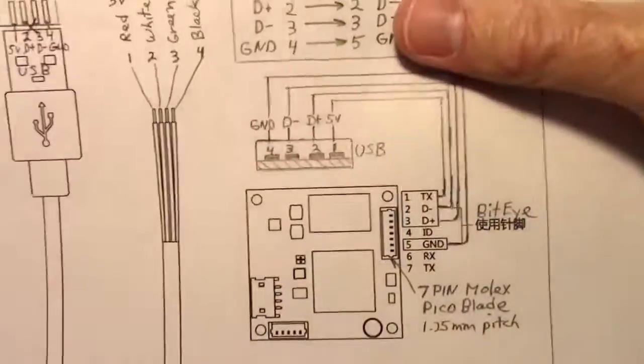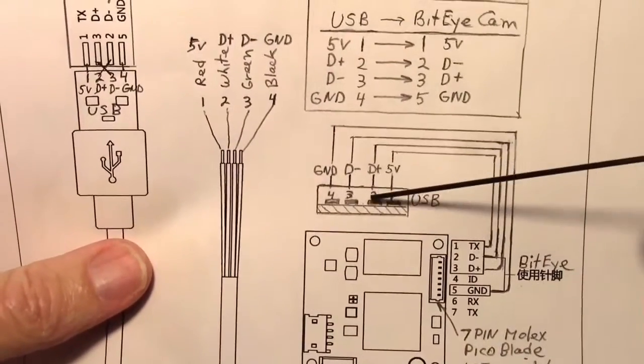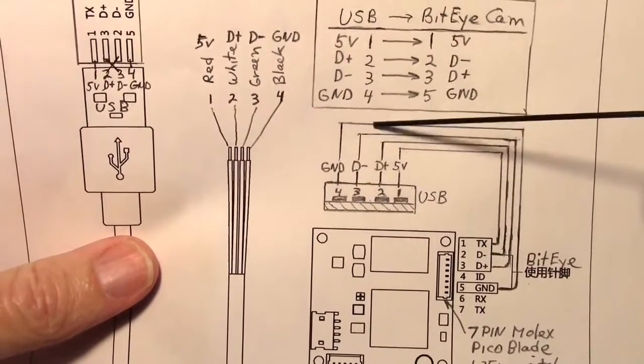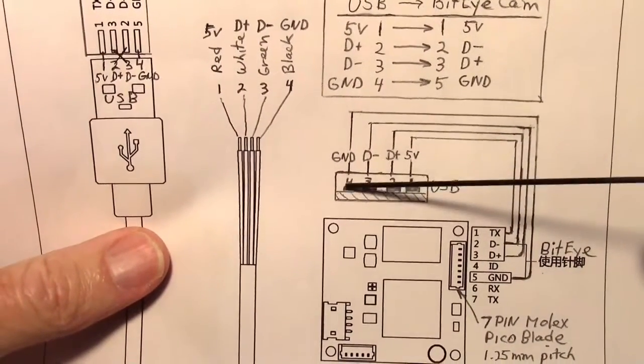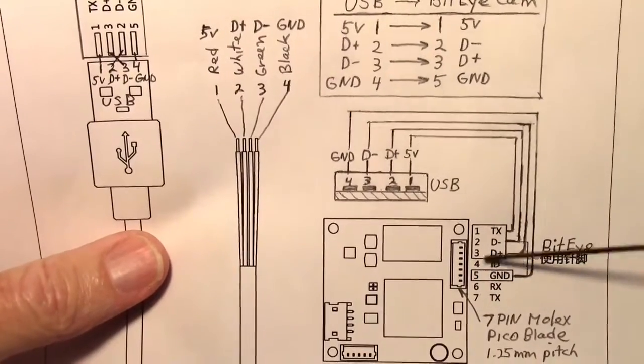We just want to go pin one to pin one, pin two to pin two, pin three to pin three. And then the last one, which is the ground, pin four actually goes to five. So you skip a pin right there.